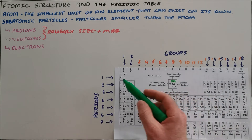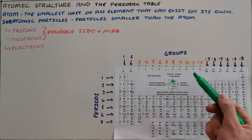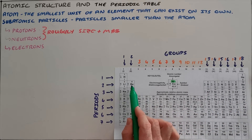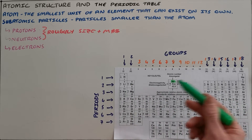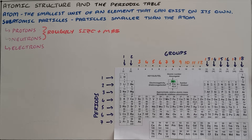The second element is helium with two protons, or an atomic number of two. The third element is lithium with three protons, and beryllium has four protons. The atomic number increases from left to right and top to bottom in the periodic table.